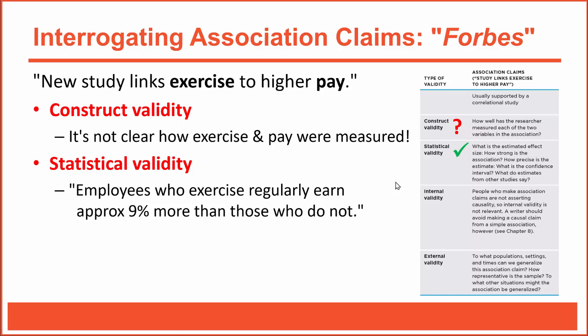We don't typically need to worry about internal validity for association claims, since correlational research can't prove causation. Importantly, the Forbes article doesn't make any causal claims — it doesn't imply that exercise causes pay increases or that more exercise leads to pay increases. It simply states that the two variables are linked or associated, which are appropriate ways to describe association claims.